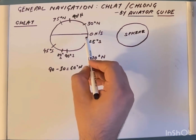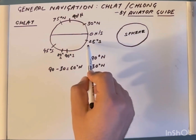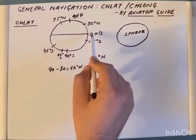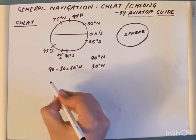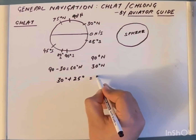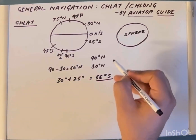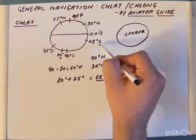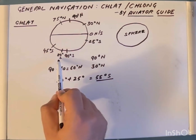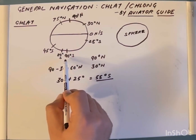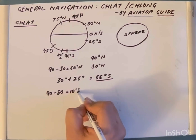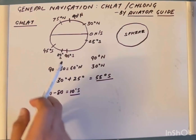To find the ch-lat between 30 North to 25 South: from 30 North to the equator is 30 degrees, and from the equator to 25 South is 25 degrees, so we add 30 plus 25, giving us 55 degrees South. The ch-lat from 30 North to 25 South is 55 degrees South. To find the ch-lat between 80 South and 90 South, that will be 90 minus 80, which is 10 degrees South.